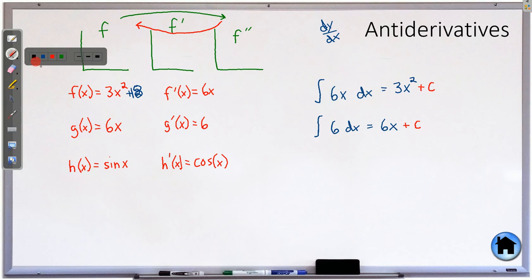And the last one here. If we take the antiderivative of cosine of x, and we go backwards, that lands us on sine of x. And again, you need that plus C, because there could have been a plus 2 at the end, that constant still would have disappeared when you took the derivative.